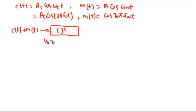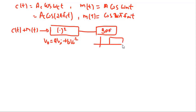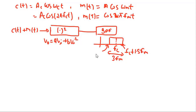The non-linear device has input-output relation v0 equal to a·vi plus b·vi². The output of this non-linear system is then input to a band pass filter whose center frequency is fc and bandwidth is 3fm. This means the upper band is at fc plus 1.5fm and the lower band is at fc minus 1.5fm, and the output of this band pass filter is the amplitude modulated signal.